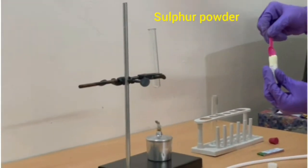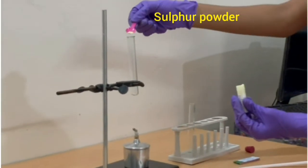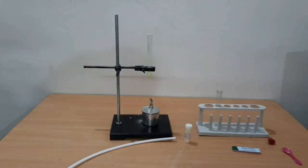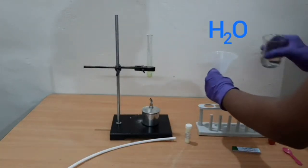Take 5 grams of sulfur powder in a test tube. Take a little water in the other test tube.